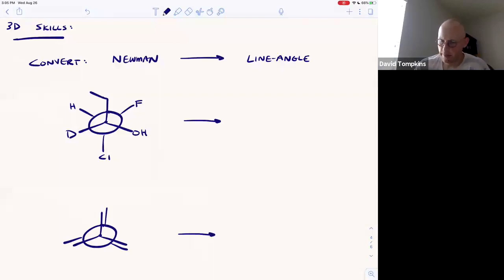I'm going to show you both an anti-conformation and an eclipsed conformation where we convert that into a line-angle perspective. A line-angle has lines, wedges, and dashes that give us three-dimensional perspective. These line-angle perspectives are very important for determining absolute configurations like R and S in stereochemistry.